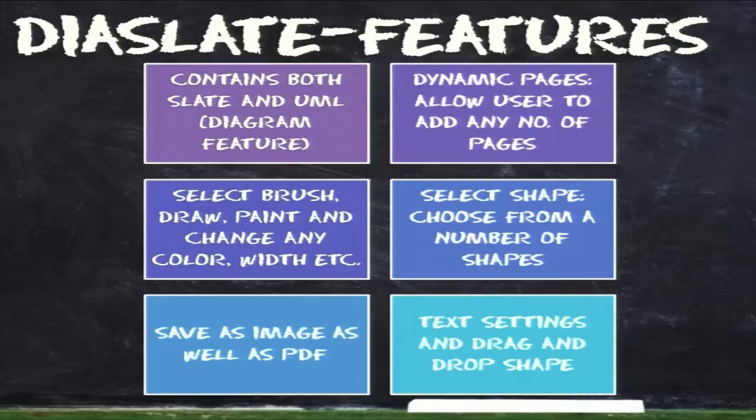Most slate applications just have drawing and erasing, but Dyer Slate also has changing the color of the brush, changing the width of the brush, changing the width of the eraser, and changing the color of the background. We can also add pages dynamically in case one page isn't enough. Apart from drawing, we can save these drawings and view them later, either as a PDF or as an image.